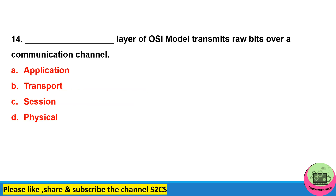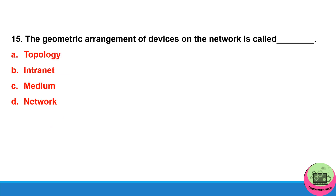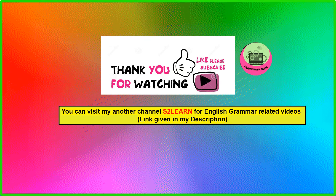Question 14: which layer of the OSI model transmits raw bits over a communication channel? That is the physical layer. Question 15: the geometric arrangement of devices on the network is called topology.